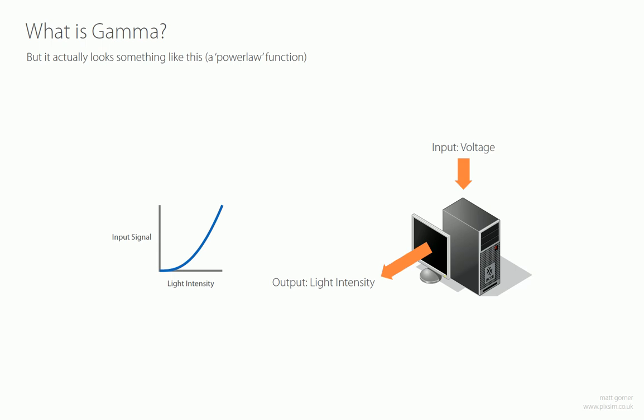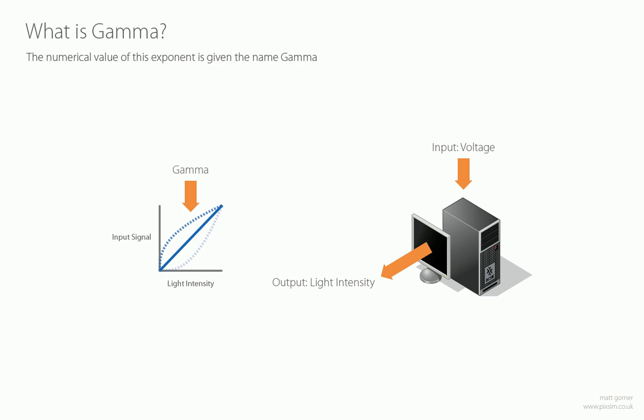In order to bring this back to something more respectable, a compensation is added — this inverse of the power law function — to counteract it and bring it back to a linear scale. That curve is gamma. That's what gamma is. The technical description is that the numerical value of this exponent is given the name, colloquially, gamma. So that's what it is and where it comes from. Effectively, it's changing the way that light intensity is displayed on screen so that we can see it better. It just helps to display images so that we can see them — that's what gamma does.